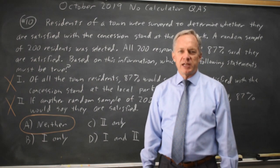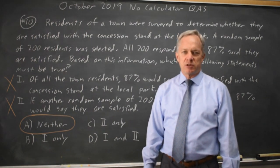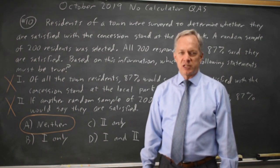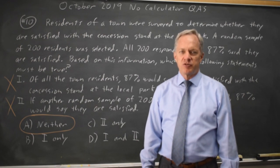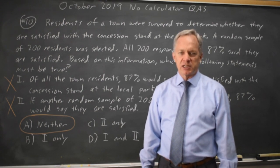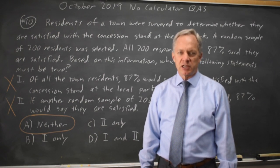The College Board will ask you to interpret a survey or look for flaws in a survey, so make sure you review the statistics topics that are on the SAT that may not be in your mathematical track. This may be something you have to review on your own through Khan Academy or some other source.